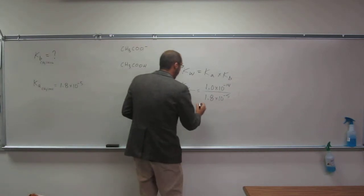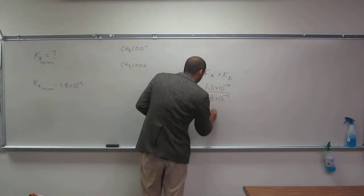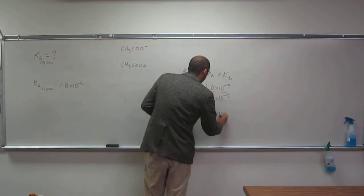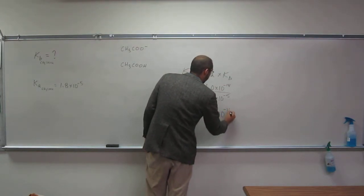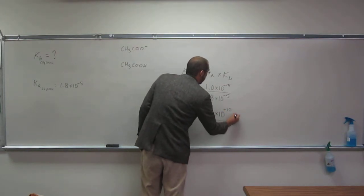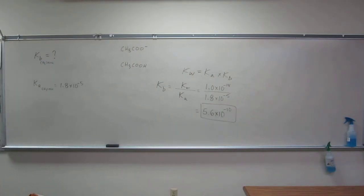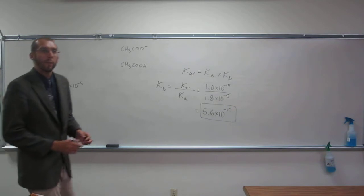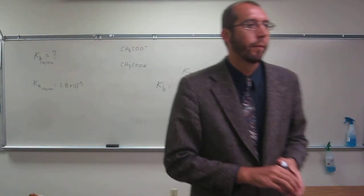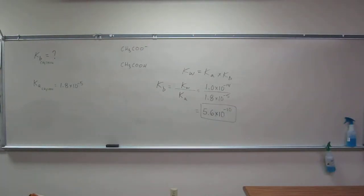Okay, and I get 5.6 times 10 to the negative 10. So that would be the KB of sodium acetate. So would you be OK with doing something like that? Any questions on this one?